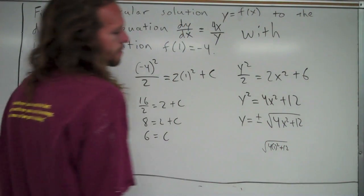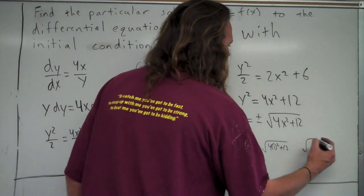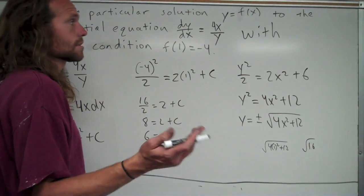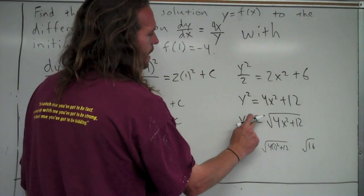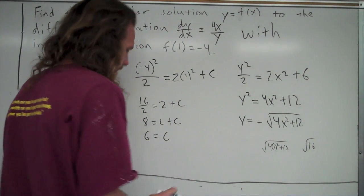Square root of 16 is 4. So in order for y to be equal to negative 4, I actually need to use the negative of that. So it's a little tricky, but when you have an option like that between a plus or minus, and you don't always have it depending on what your problem is, you have to make sure that your initial condition works in your final answer.